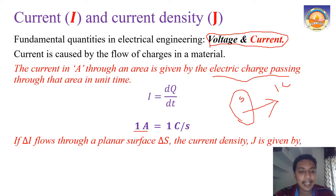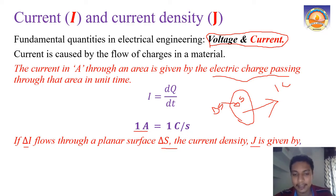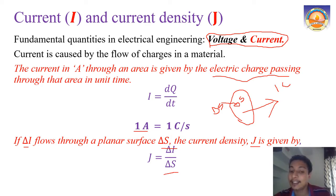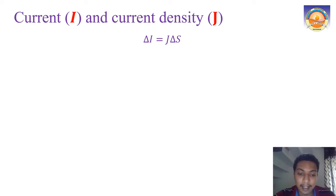If delta I is the current flowing through a planar surface delta S - considering a small area of that surface - then the current density J is defined as delta I divided by delta S. We can rewrite this as delta I equals J times delta S, meaning the total current equals current density multiplied by the surface area considered.